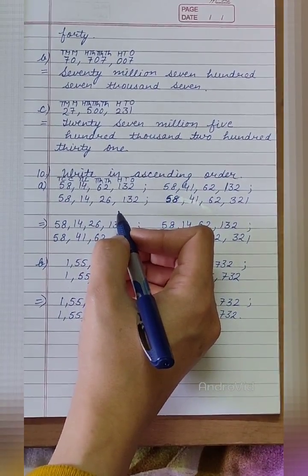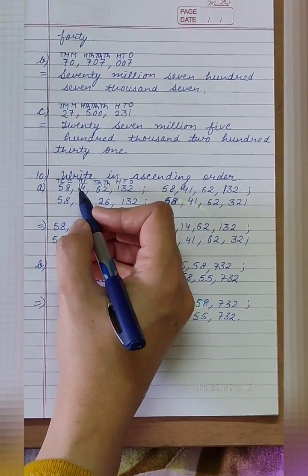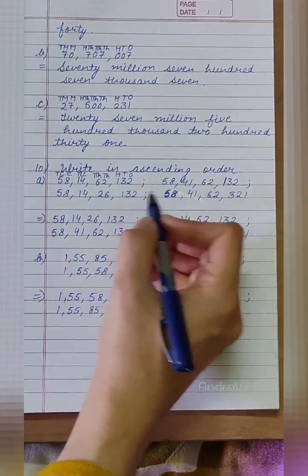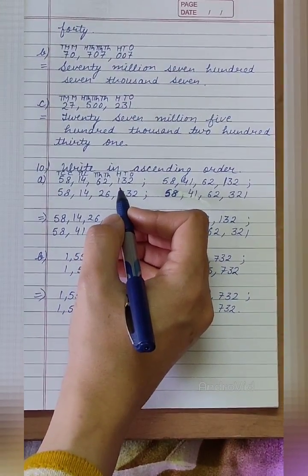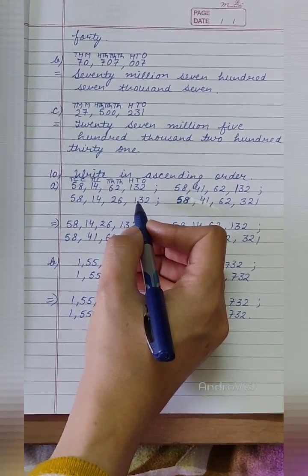So, move to next digit. Next digit is 1 in 1st and 3rd number and 4 in 2nd and 4th number. So, firstly, we will compare 1st and 3rd number.